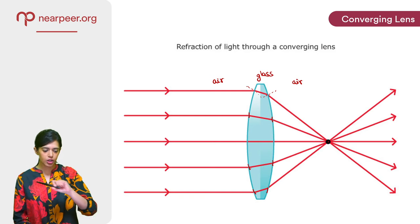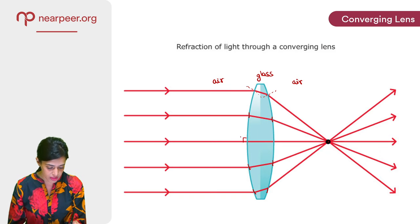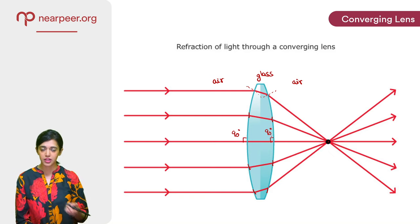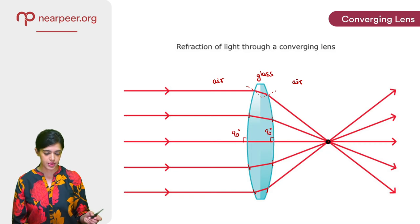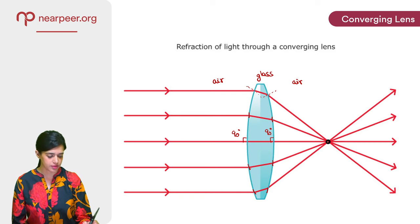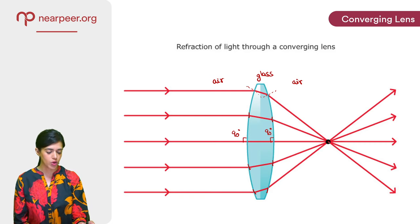The ray in the middle however goes straight ahead. Why is that? Because the angle that it makes with the interface is 90 degrees and you know when that happens, no bending, no deviation of the path takes place. So due to all this refraction that is taking place for all these rays, they end up converging to a point that is shown here in black.